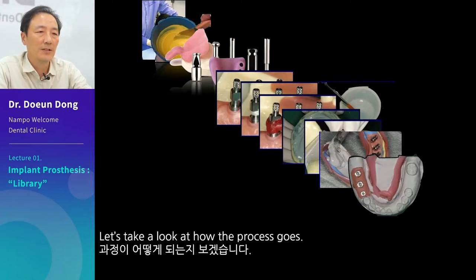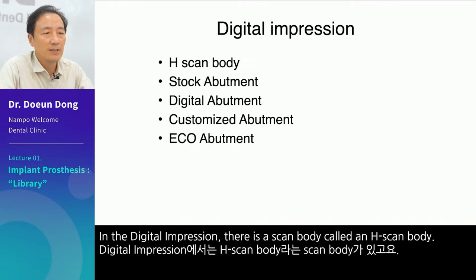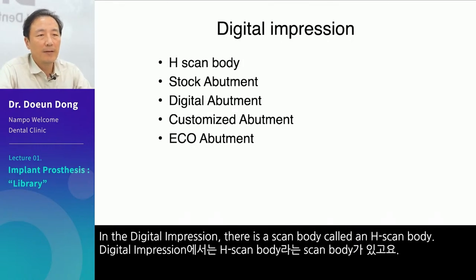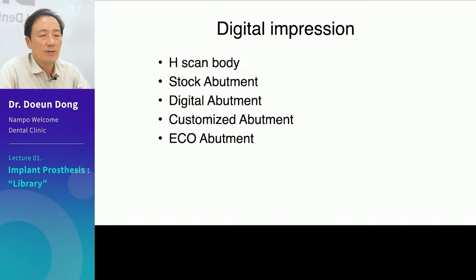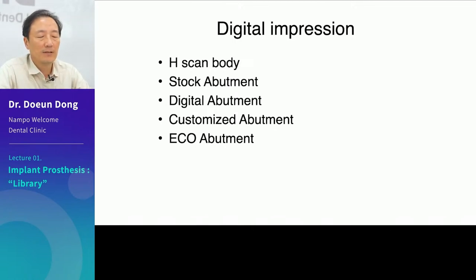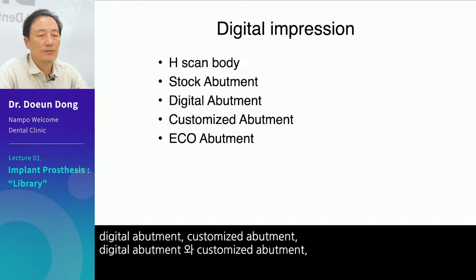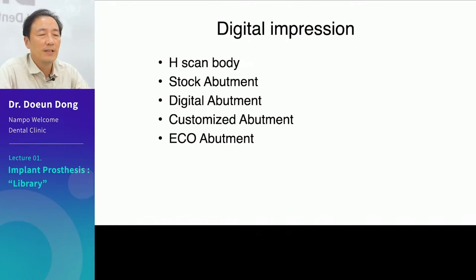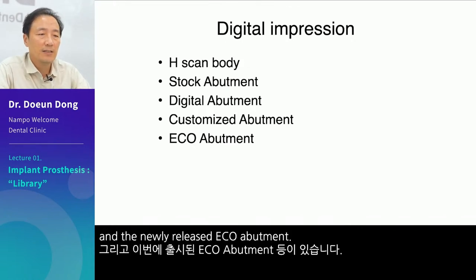Let's take a look at how the process goes. In the digital impression, there is a scan body called an H-scan body. We can create a digital impression using things like stock abutment, digital abutment, customized abutment, and the newly released eco abutment.